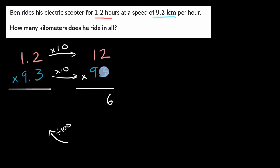But let's work through this. 3 times 2 is 6. 3 times 1 is 3. Now we'll go to the tens place. 9 times 2 is 18, and then 9 times 1 is 9, plus 1 is 10.